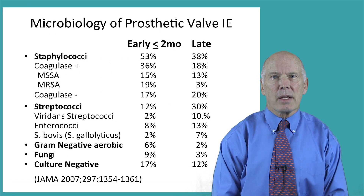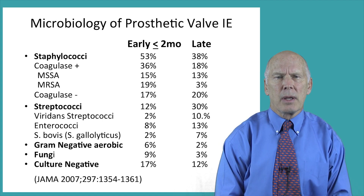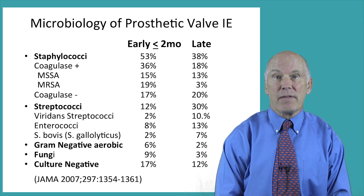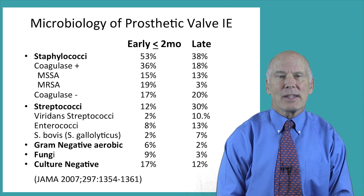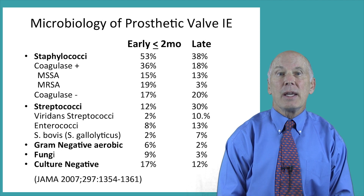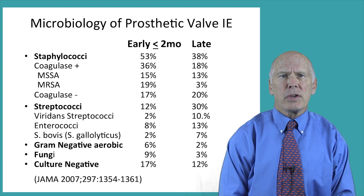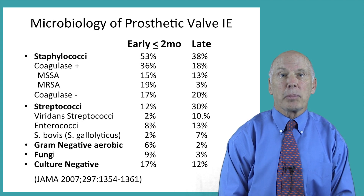Prosthetic valve endocarditis provides a great challenge because this infection can be caused by the same organisms as native valve endocarditis, as well as additional less virulent organisms — particularly coagulase-negative staph — less adherent bacteria, particularly gram-negative bacilli, and also fungi.